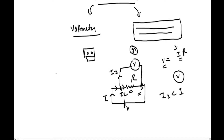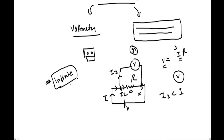We can try to remove this problem by connecting a very high resistance in series with the voltmeter. If we want the voltmeter to not draw any current from the circuit, we have to connect an infinite resistance in series — but it is not possible to design something with infinite resistance. So we can never completely remove the problem of the voltmeter drawing current from the circuit.